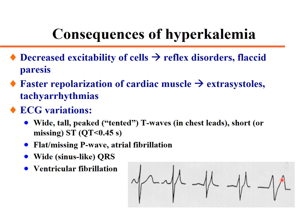In severe conditions, a wide QRS complex develops approximately the same amplitude as the T wave, giving a sine wave appearance. In this case, the ECG detects twice the actual heart rate because it cannot distinguish between QRS and T waves.